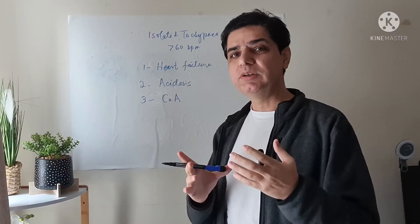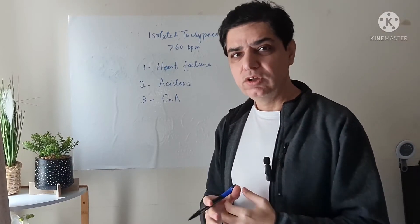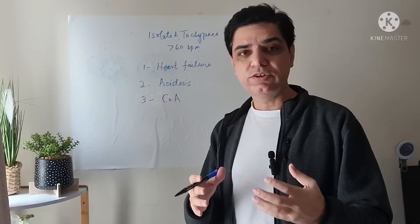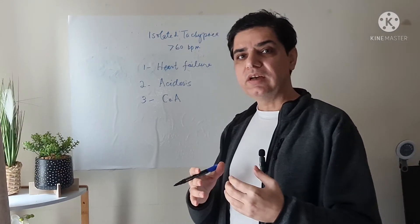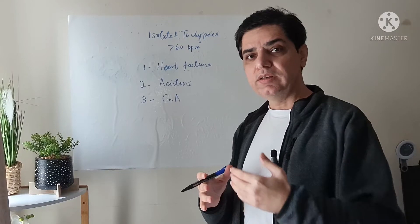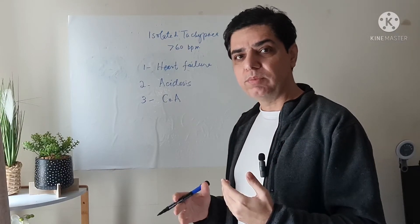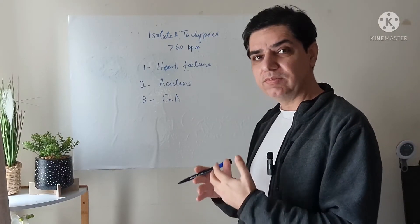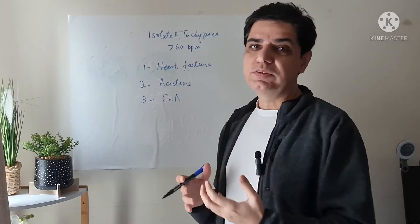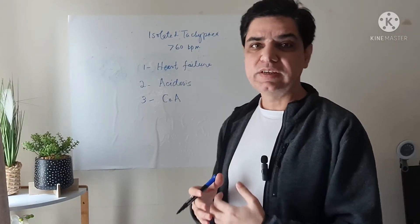Most of the lesions are proximal to the ductus arteriosus. By the time the ductus arteriosus closes, then there is a gap in the perfusion of the upper part of the body and the lower part of the body. The lower part of the body doesn't get enough oxygenated blood, and obviously that would lead to acidosis.